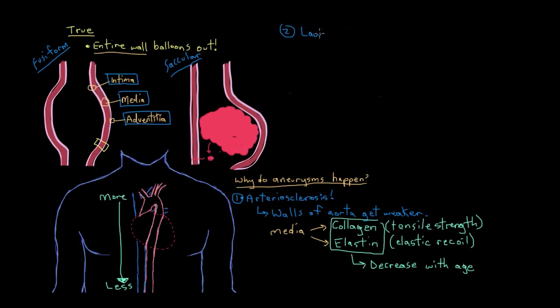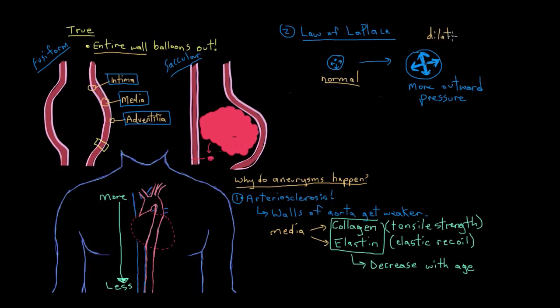Second, according to the law of Laplace, which you might have learned from your physics teacher, dilation of a tube results in increased wall tension from whatever fluid is inside that tube. And so in our case here, the fluid is blood that's rushing through at pretty high pressure. Remember, we've just left the heart. And that blood pressure causes the wall to dilate even more. So there's a pretty bad cycle that goes on here to cause an aneurysmal dilation. The wall weakens, which causes it to be more prone to dilating. And the more dilated it gets, the more prone it is to becoming more dilated because then it isn't able to cope with the blood pressure.